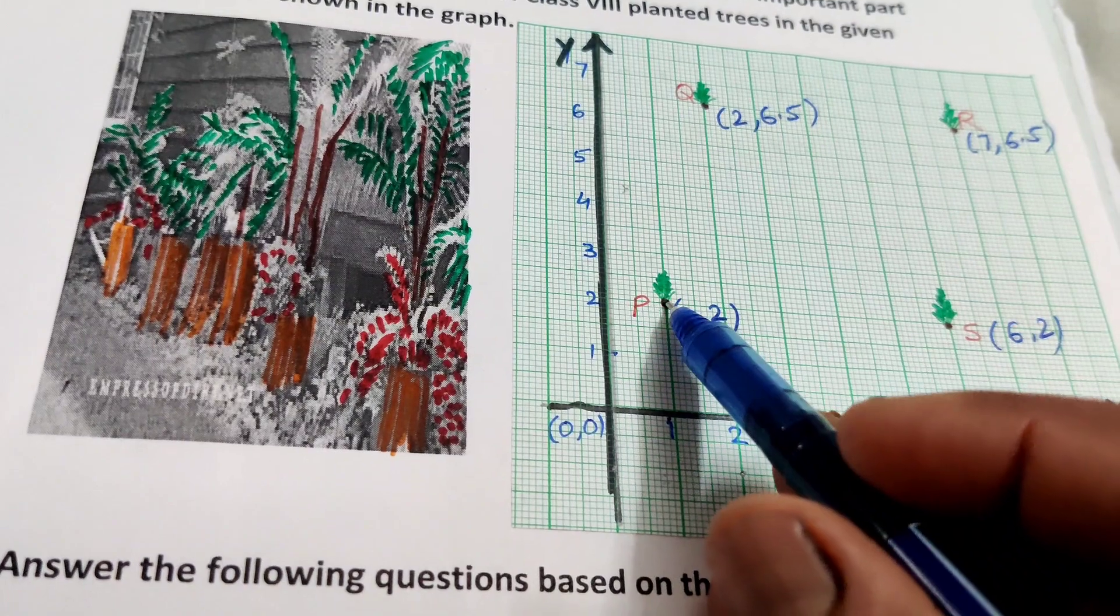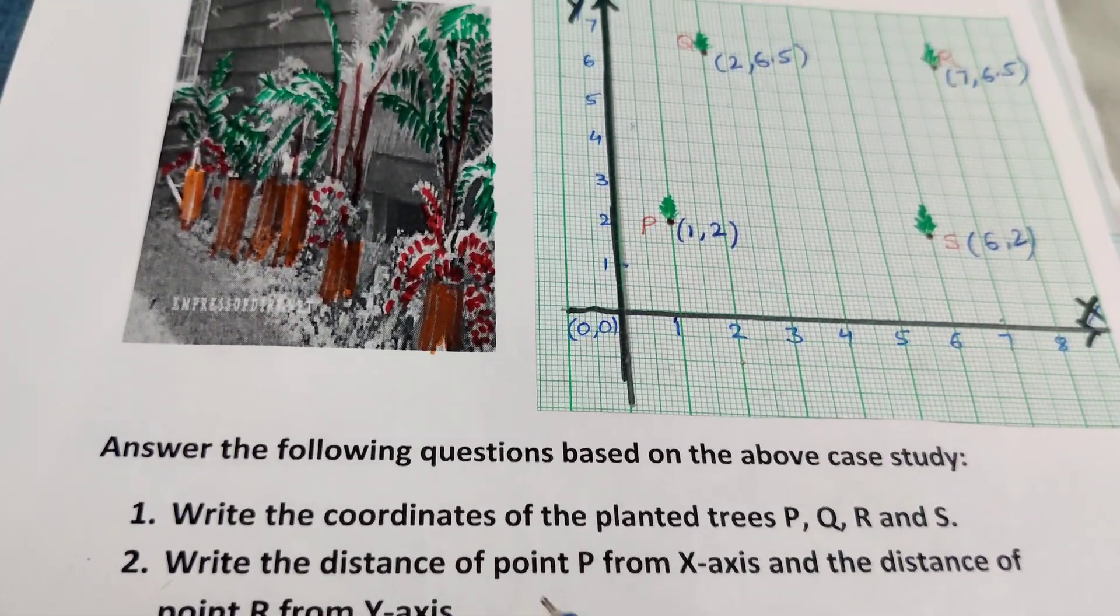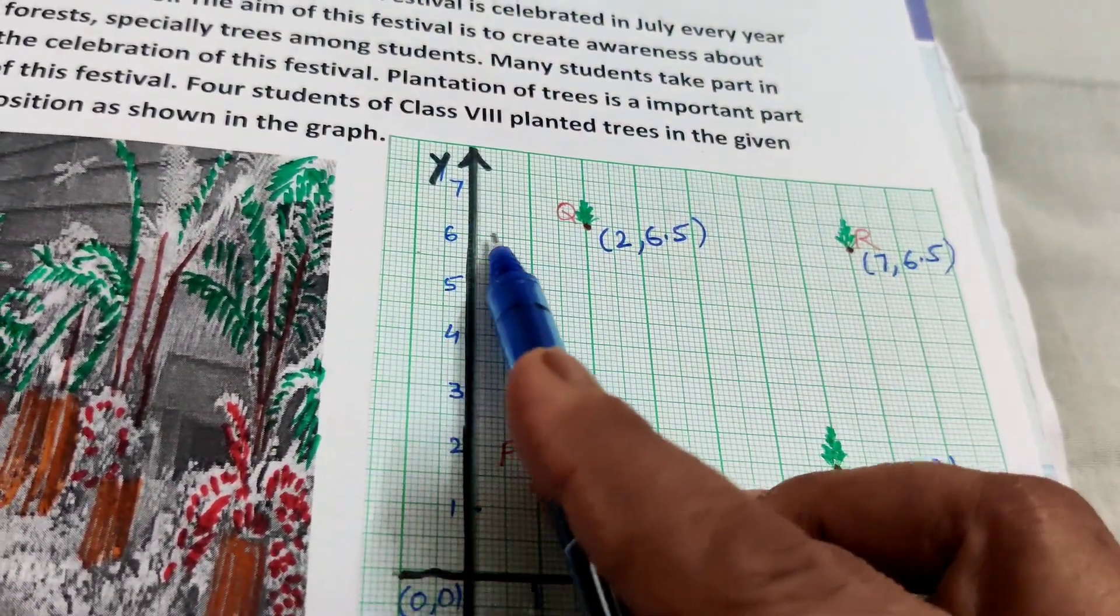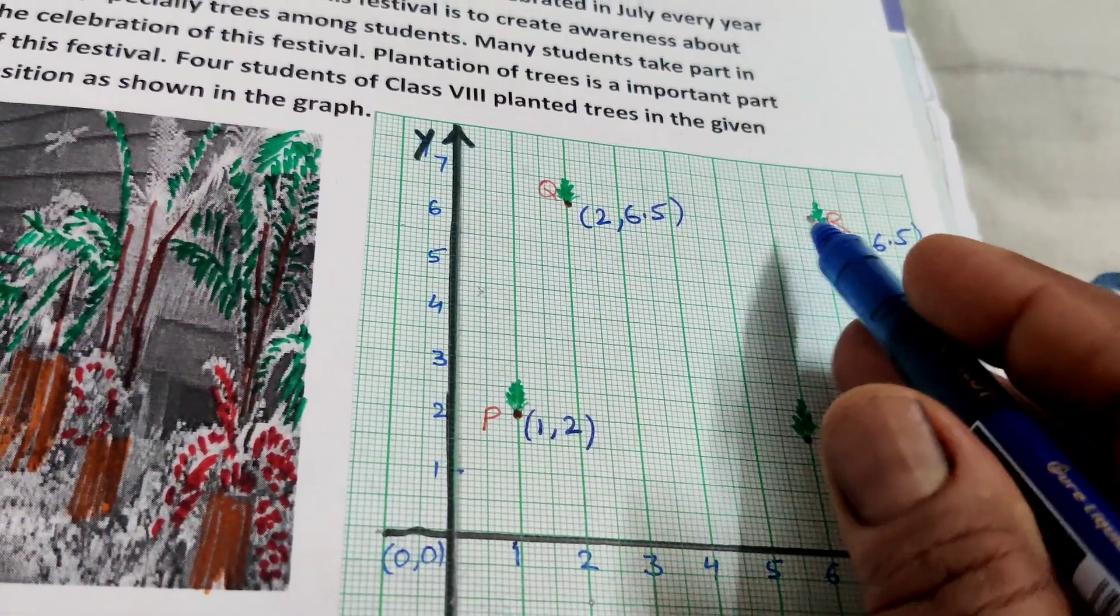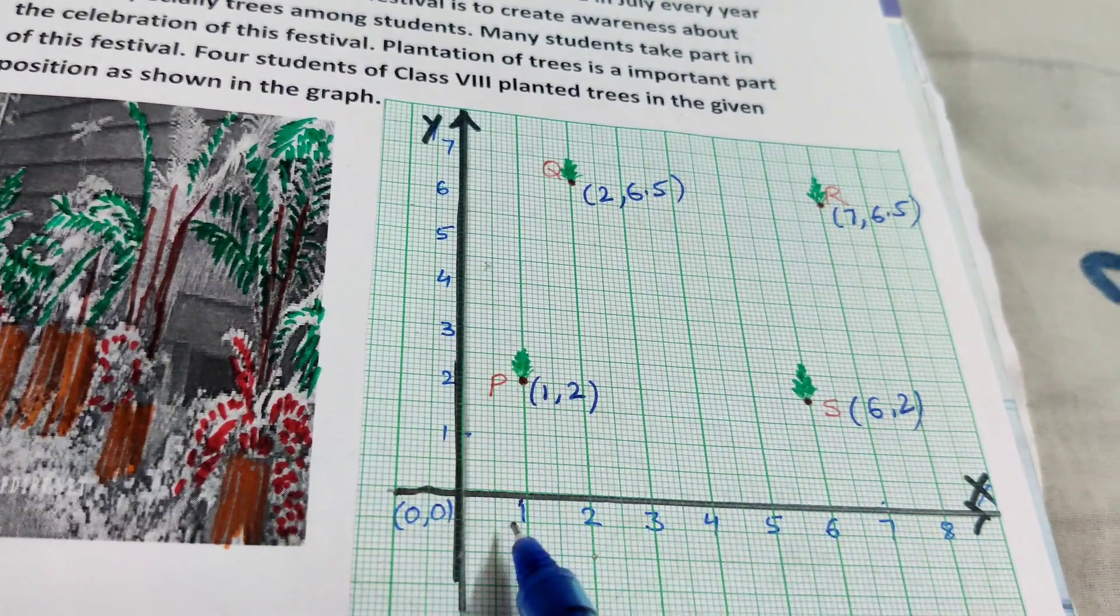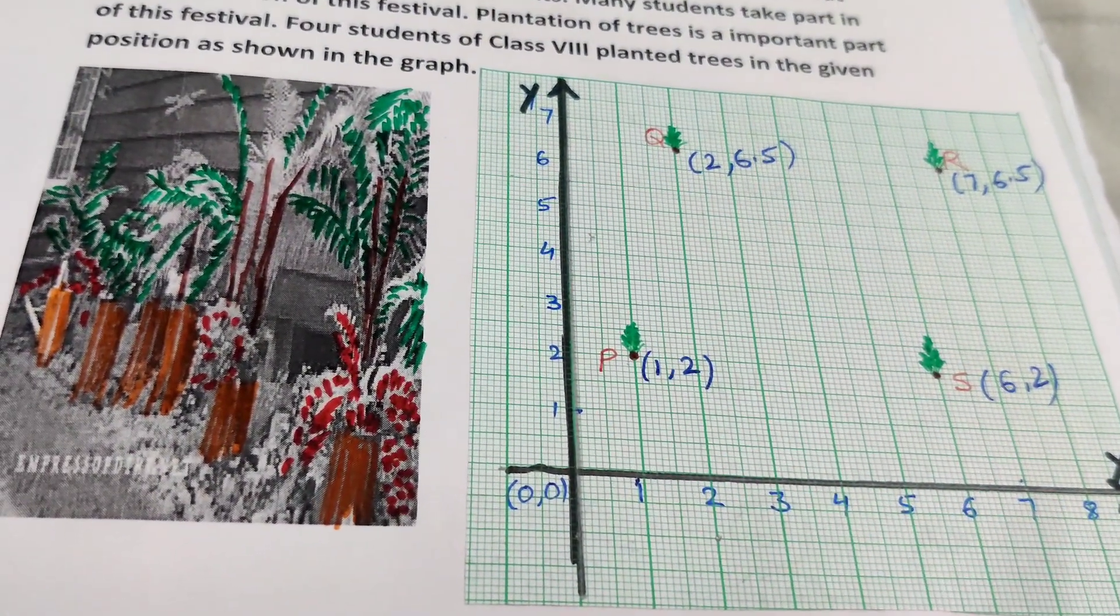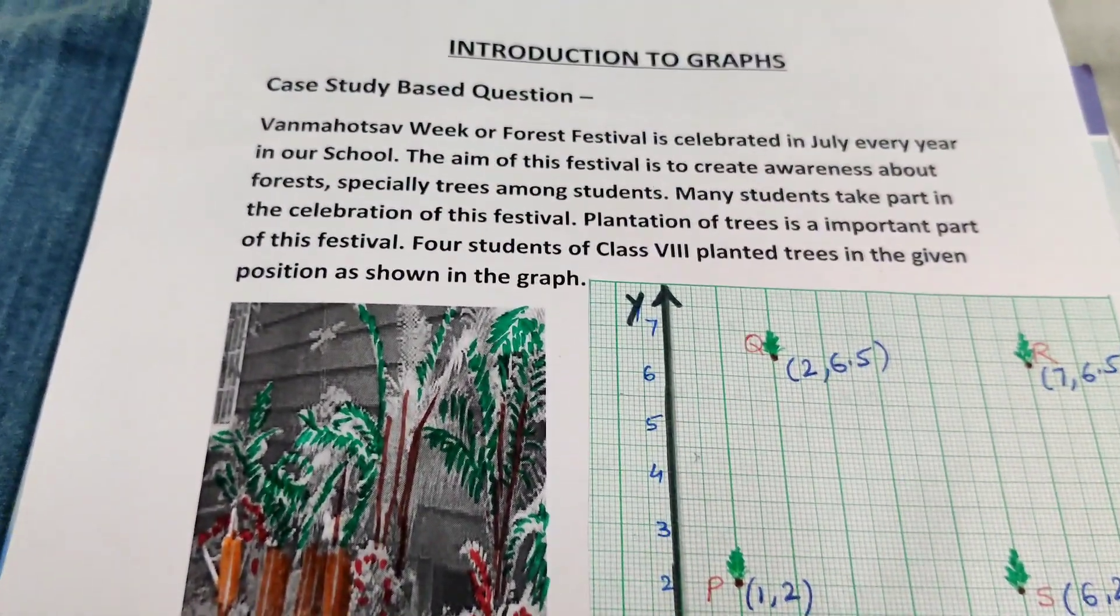And the distance of point R from y-axis. This is the point R. From the y-axis, these are the coordinates. How much? 7. The distance from y-axis is 7. 1, 2, 3, 4, 5, 6 and 7. 7 units. This is the case study of the chapter introduction to graphs.